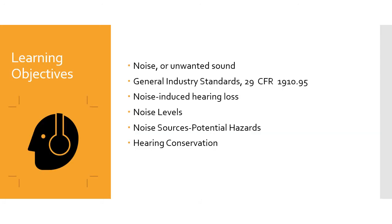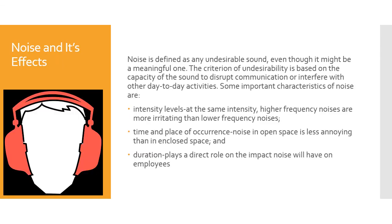CWI prep course — Welding Safety and Hearing Conservation, Module 2, Part 6. Learning objectives: noise or unwanted sound, general industry standards 29 CFR 1910.95, noise-induced hearing loss, noise levels, noise sources, potential hazards, and hearing conservation.